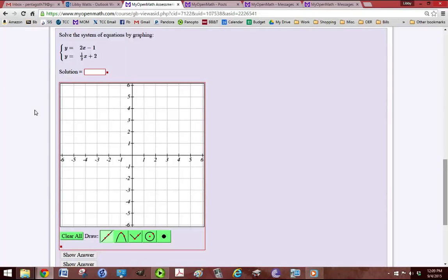We want to solve this system of equations by graphing it. The easiest way to graph is to use the slope, which is 2, and the y-intercept negative 1.